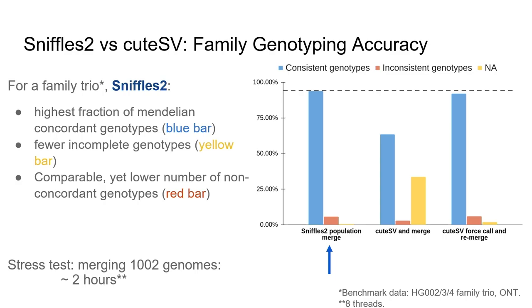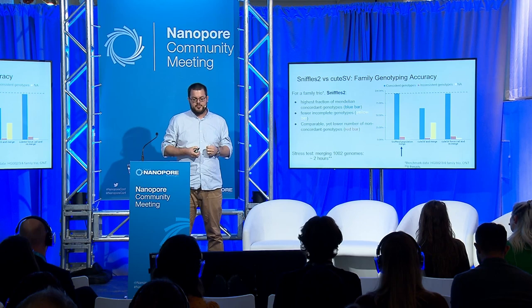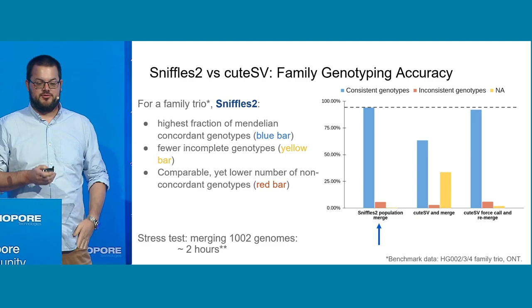Just for fun — as I always say, it's designed for population mode — we also took the 1000 Genomes Nanopore dataset and produced a genotyped VCF file from it. Merging these 1000 genomes took around two hours with 8 threads. That's significantly faster: two hours compared to 36 hours even for just a trio. So clearly faster and better.